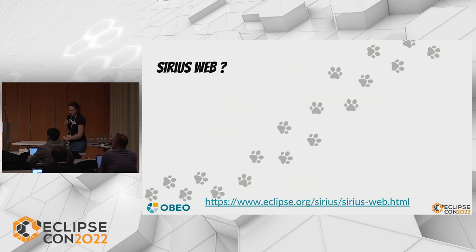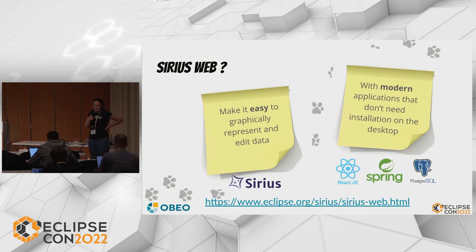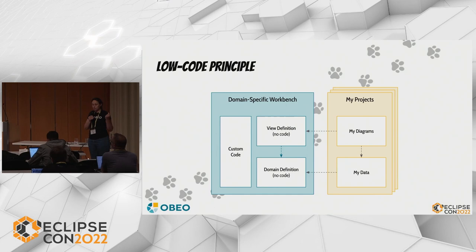To sum up what Sirius Web is: first, Sirius Web is a framework to make it easy to create graphical, collaborative editors to represent and edit data. Second, Sirius Web relies on a modern stack with web technologies such as Spring and React. Like Sirius Desktop, Sirius Web shares a low-code approach, meaning it provides a way to define domain-specific studios with as little code as possible.